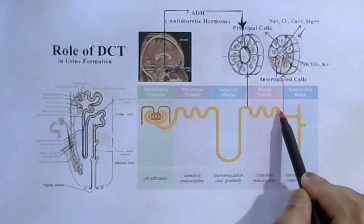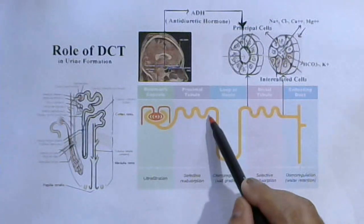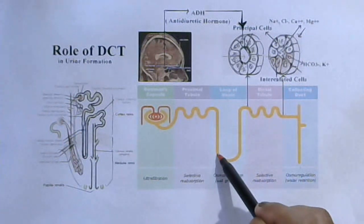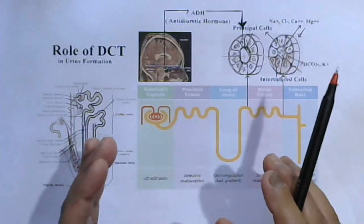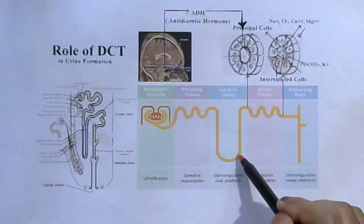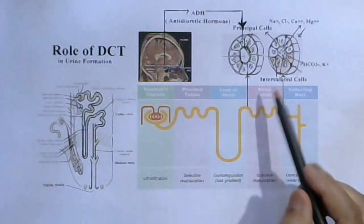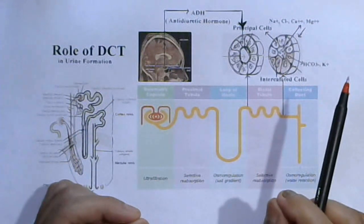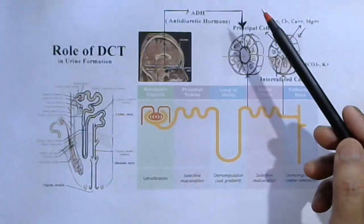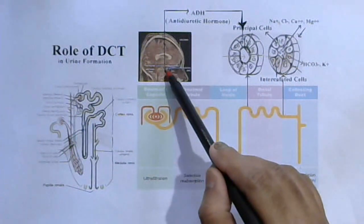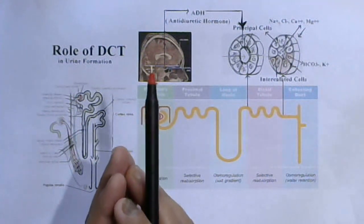The distal convoluted tubule also performs optional water reabsorption. Water reabsorption is compulsory in the proximal convoluted tubule and in the descending limb of the Loop of Henle. The ascending limb of the Loop of Henle is totally impermeable to water, so no water reabsorption occurs there. In the distal convoluted tubule, optional water reabsorption occurs under the influence of a special hormone called ADH, antidiuretic hormone, or vasopressin, which is produced by the posterior part of the pituitary gland - a type of neurohormone.